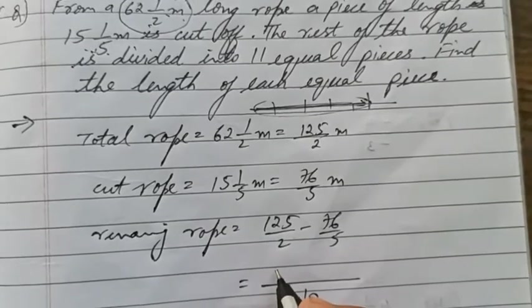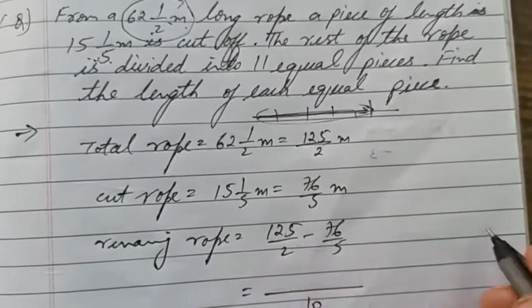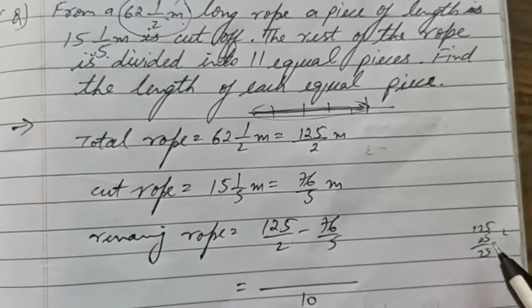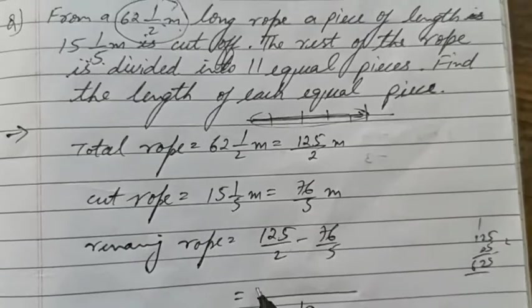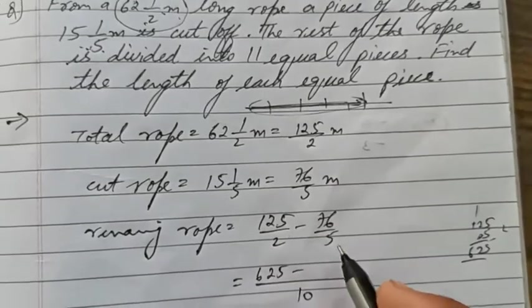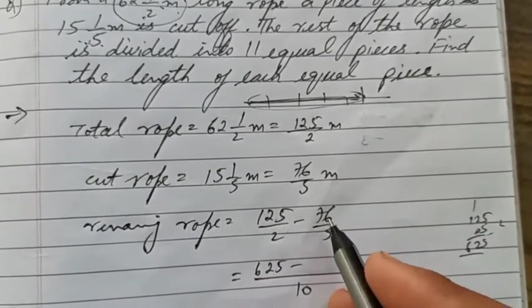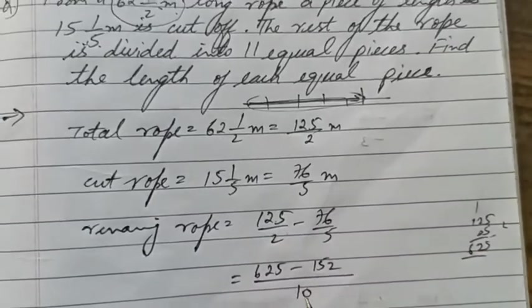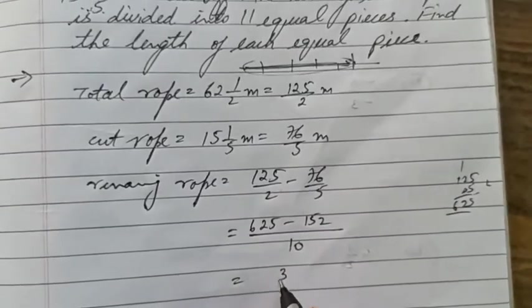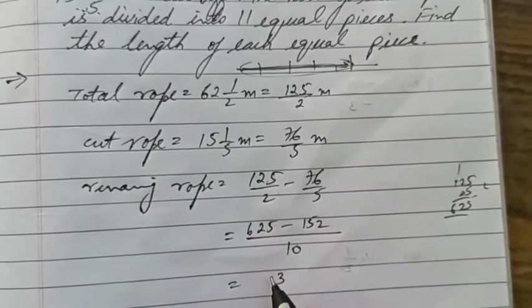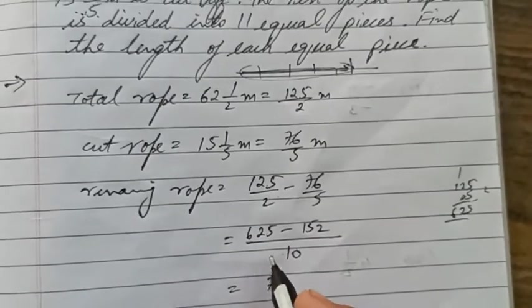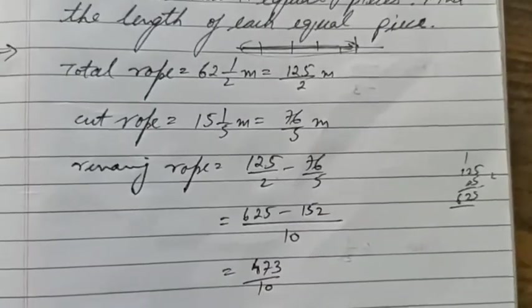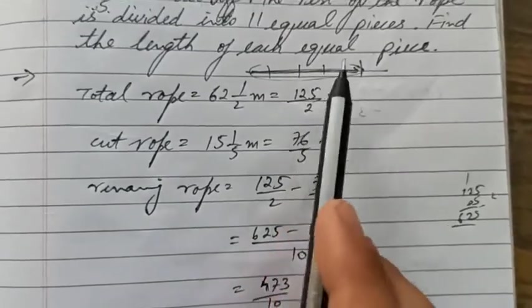Five times 12 is 60, plus two carry makes 62. Five times 5 is 25. Two times 76 is 14 plus one is 15, then 2. Subtract and get 473 upon 10.